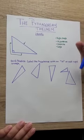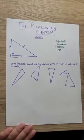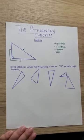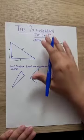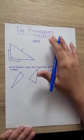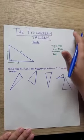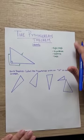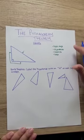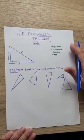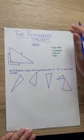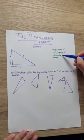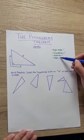Now that we have discussed with our teams what the characteristics and properties a triangle has and you have also discussed the Pythagorean theorem, we're going to use the handout I gave you. For the Pythagorean theorem, we're going to identify the following: the right angle, the hypotenuse, the opposite, and the legs.